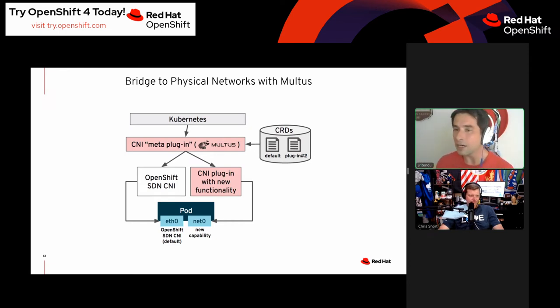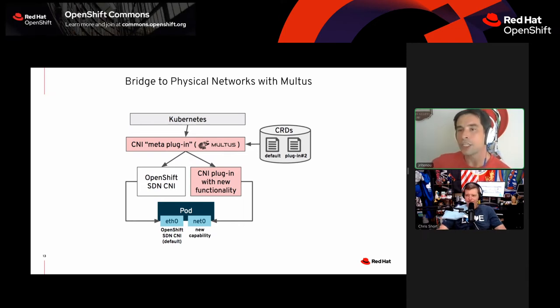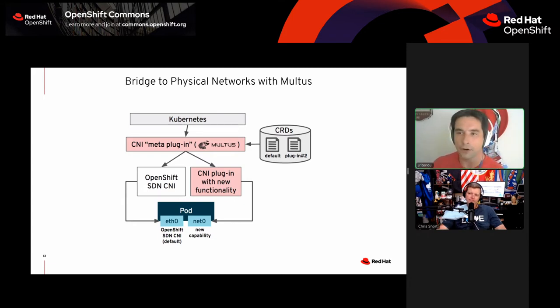The caveat here is that OpenShift network policies don't apply to these bridged interfaces. To handle that, you'd either have to run a host-based firewall on the virtual machine itself or handle security through rules on your external firewalls.